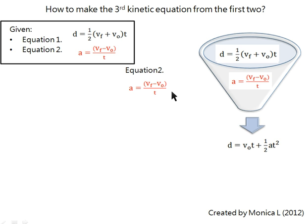First, for the second equation, we time both sides by t. t cancels out on the right side of the equation. So that leaves us with vf minus vo equals at.